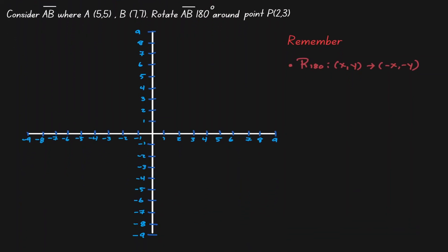In this example, let's consider a line segment where the coordinate point is given. What we want to do with this line segment is rotate it 180 degrees where the center of rotation is at a specific coordinate point. Let's start by placing this information in our coordinate plane.